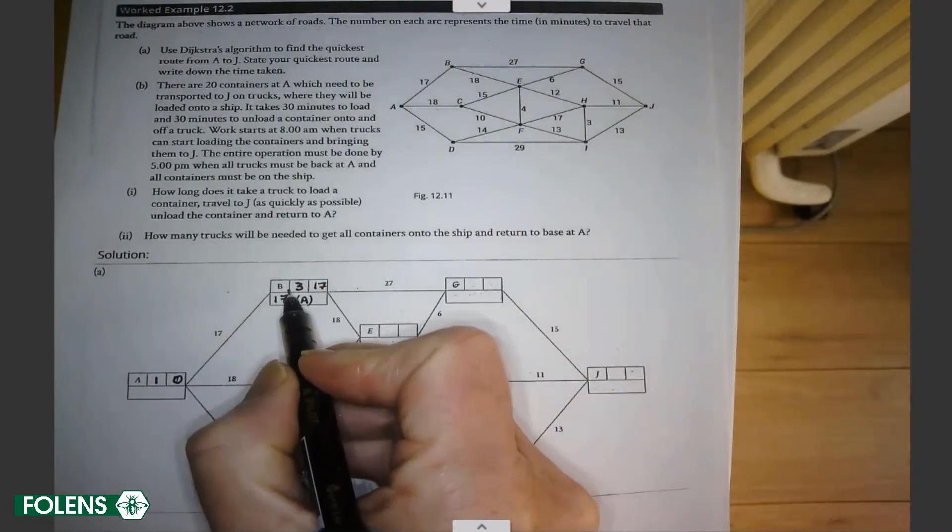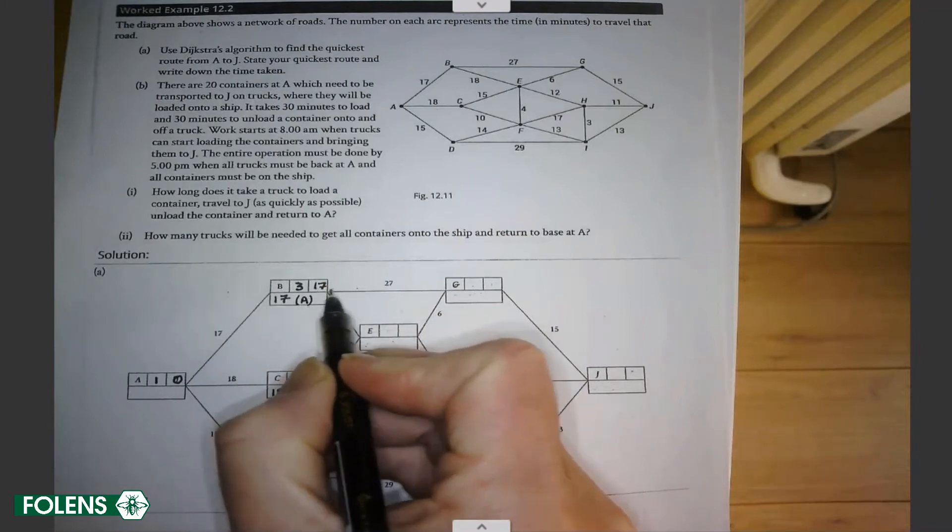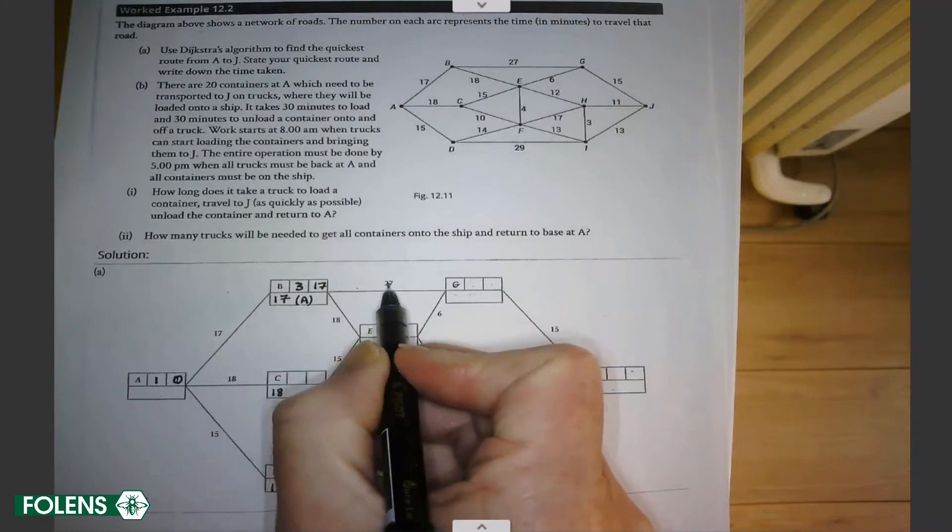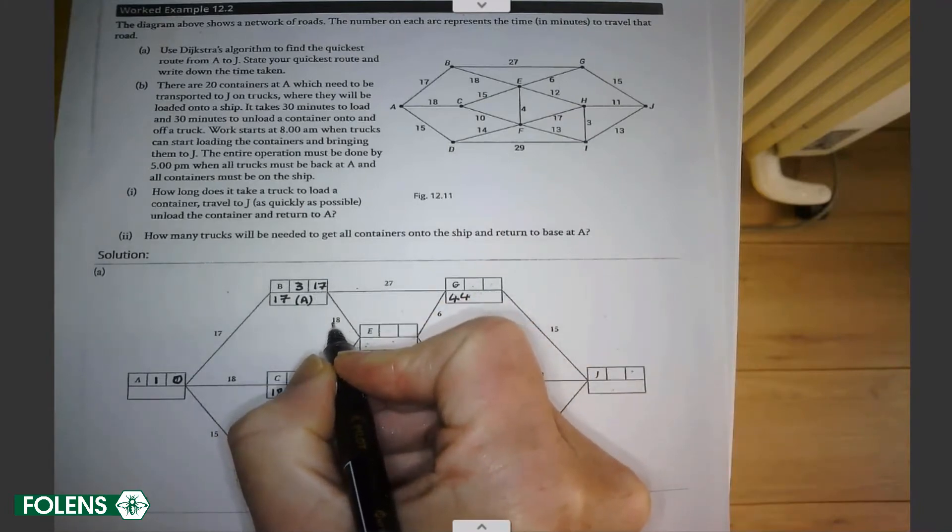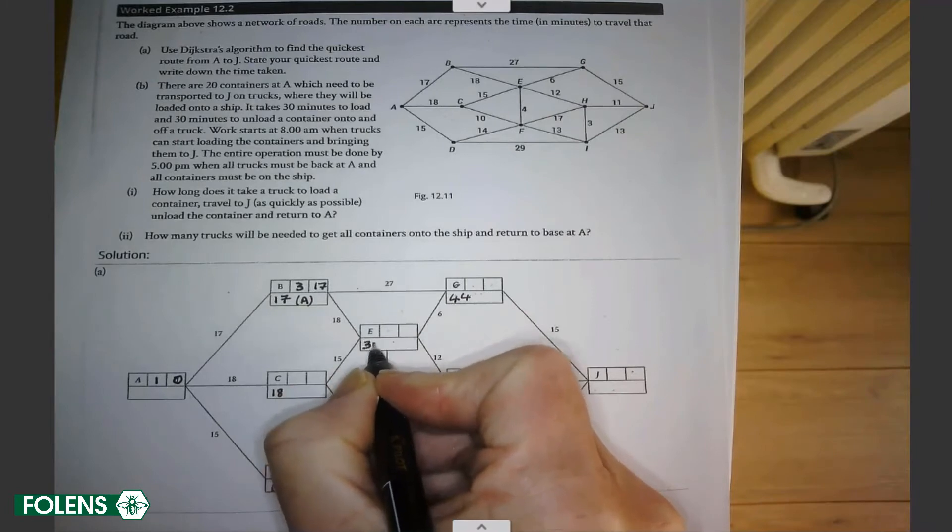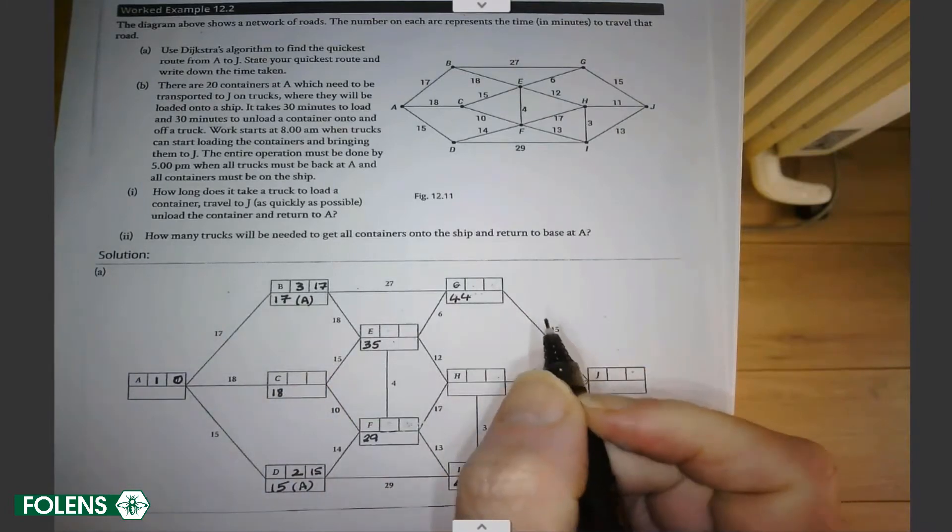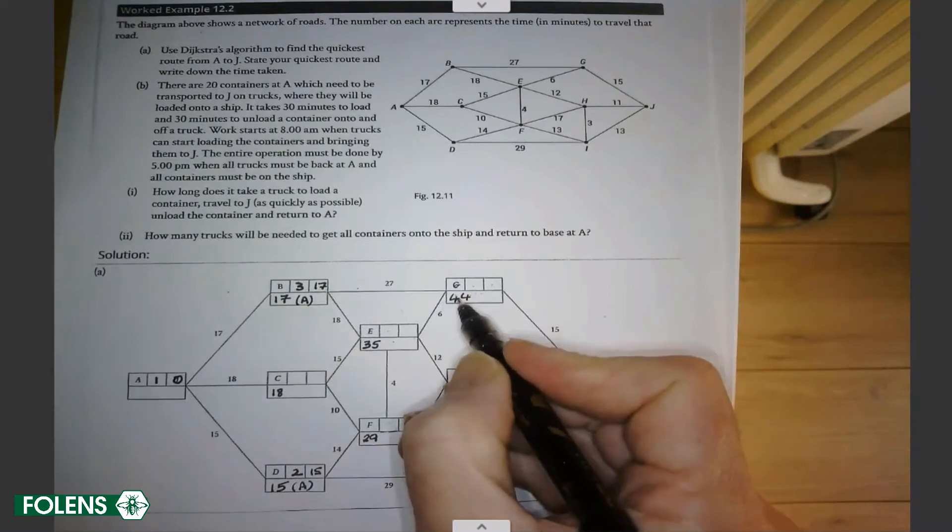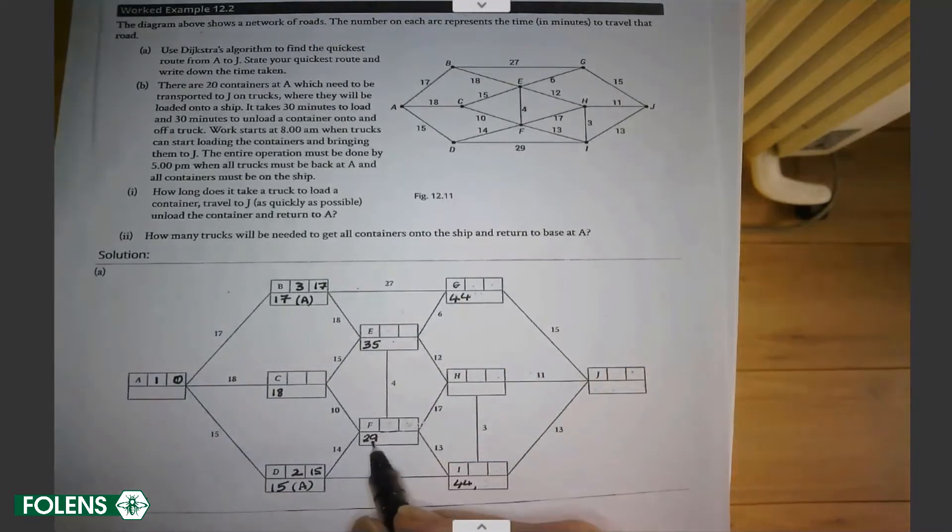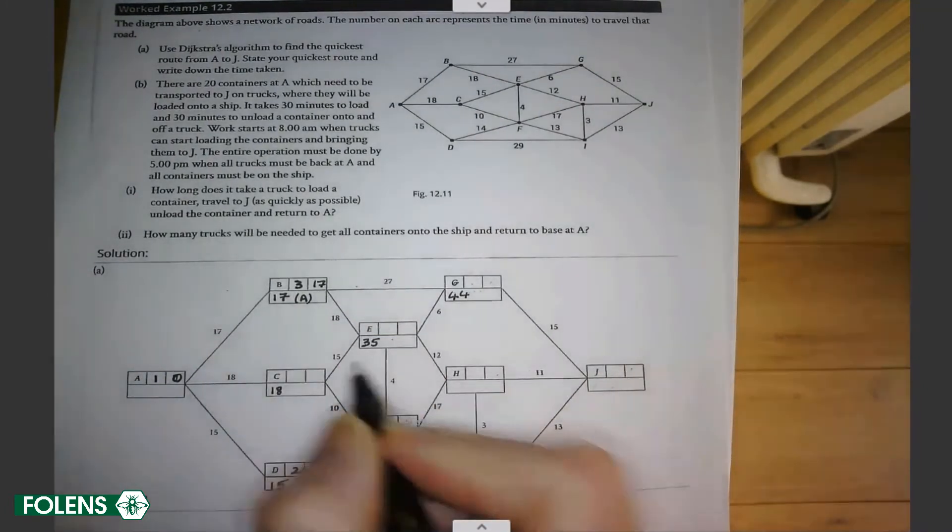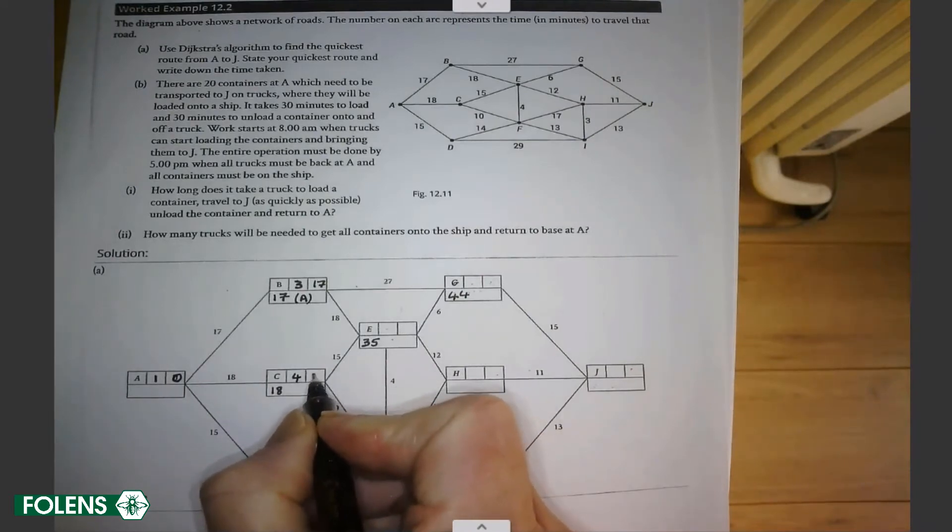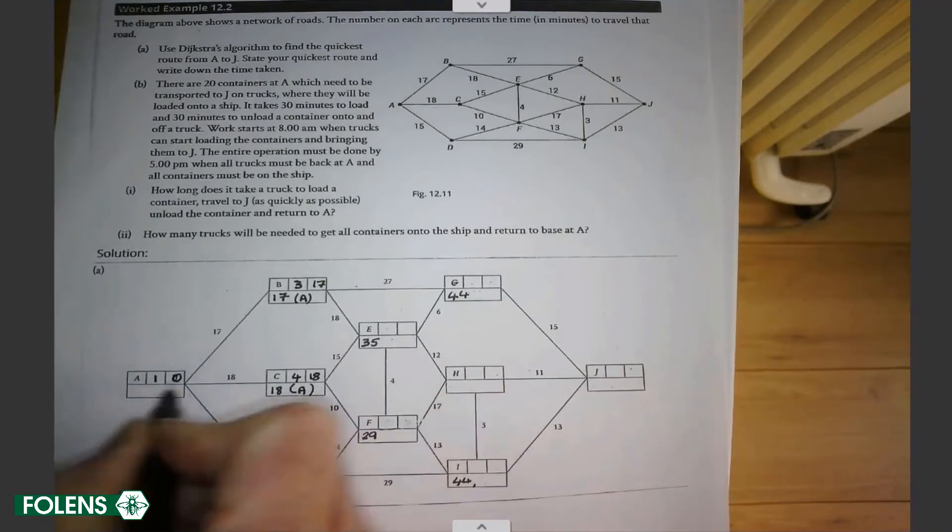Since B is our third final value, anything that it leads on to is included. 17 and 27 is 44. 17 and 18 is 35. And that's all. And now we look at all our working values. 44, 35, 18, 29 and 44. We don't look at the ones that have a final value. The lowest of those is C with 18. So C becomes our fourth final value with a final value of 18. Where did it come from? It came from A.